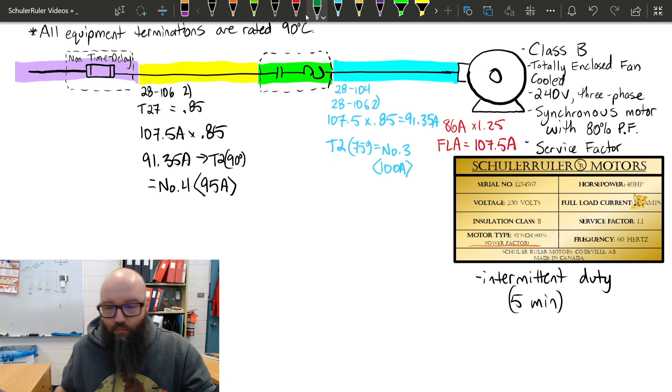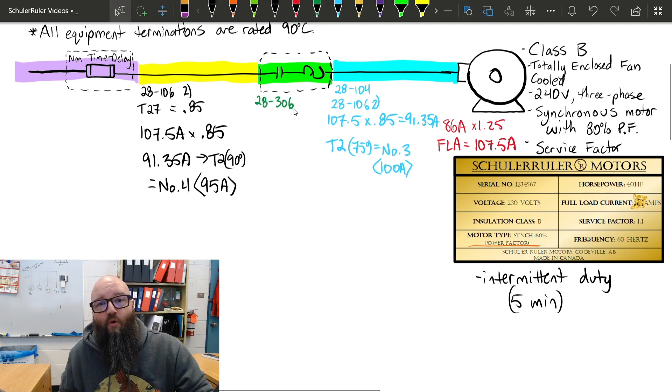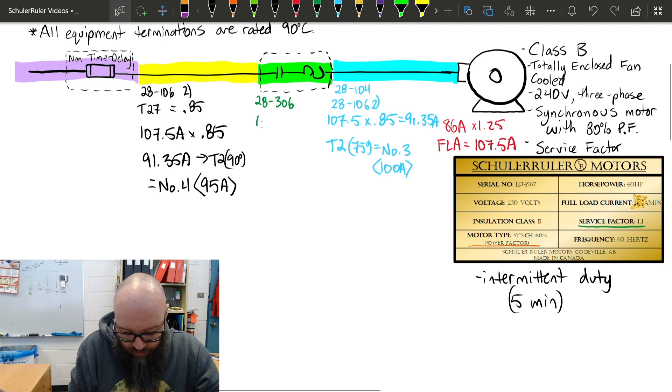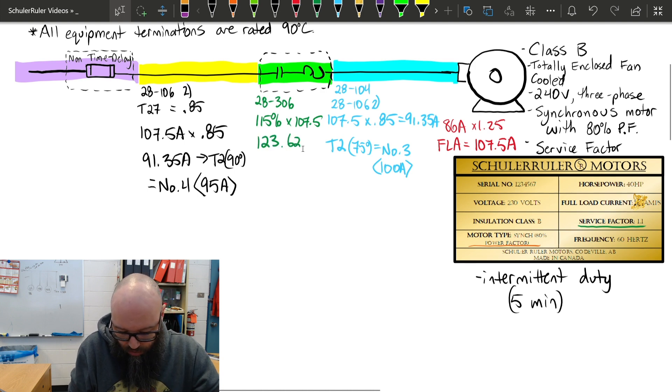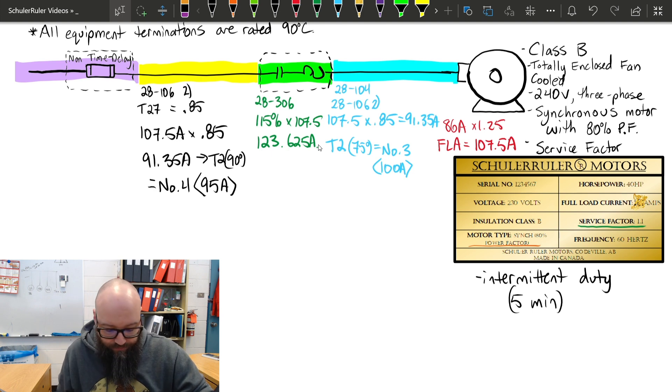Overloads, nothing changes there. We're still going to refer to 28306. It tells me for 1.15 or greater, I'm going to use 125%. In our example here, we have a service factor listed on our nameplate of 1.1, so for less than 1.15, we're going to use 115% as our multiplier times that good old FLA of 107.5 to get a maximum trip setting on that overload of 123.625 amps. If you could dial that up, that's the maximum you would be able to dial that up to for that overload according to 28306.